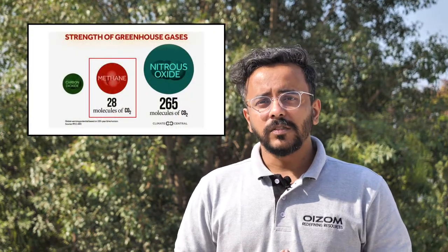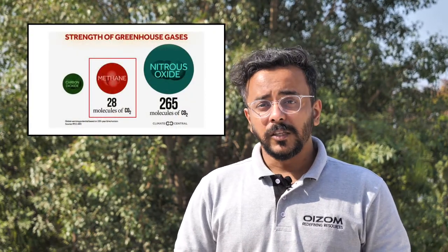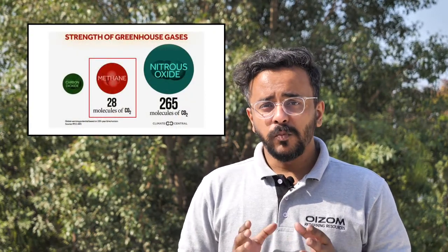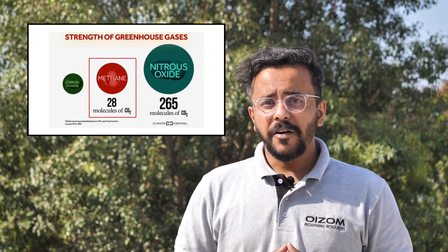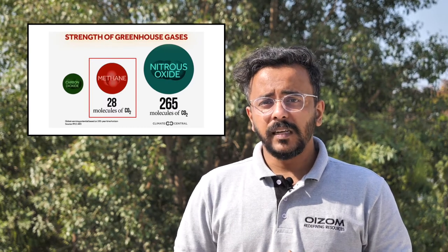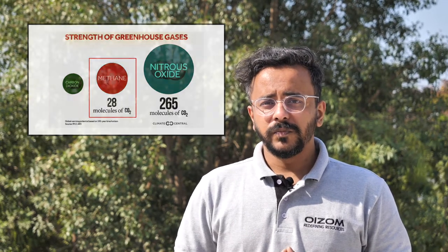Methane is the second most important greenhouse gas. It is 28 times more potent than carbon dioxide at trapping the sun's heat into the atmosphere. However, it has an atmospheric lifetime of around 12 years, much shorter than carbon dioxide.